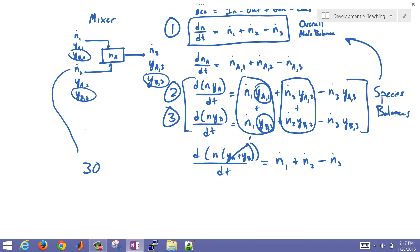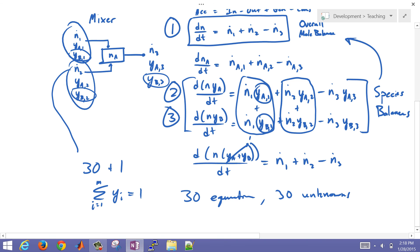Then I'm still going to have an overall species balance for each of those compounds plus an overall mole balance. And again, I'm going to add the one for the overall mole balance. But because we have the summation of I equals one to M, because that equals one, then it reduces the degree of freedom. So we're going to have 30 equations and 30 unknown values, that's if we specify the inlets to our mixer.